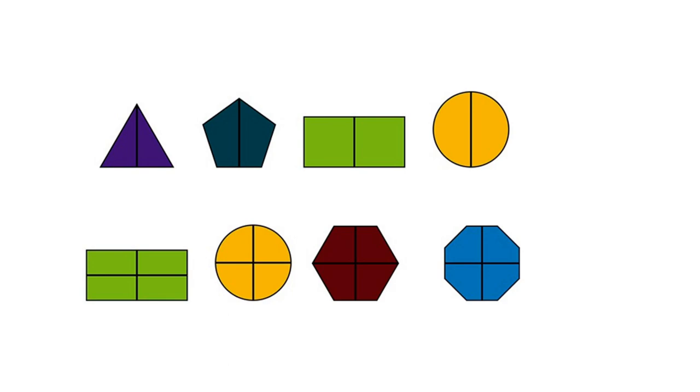2D shapes can be split in different ways to form halves and quarters. A shape that is split into halves always has two equal pieces. A shape that is split into quarters has four equal pieces.